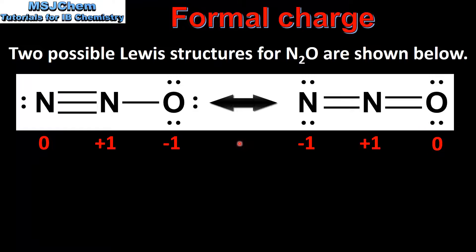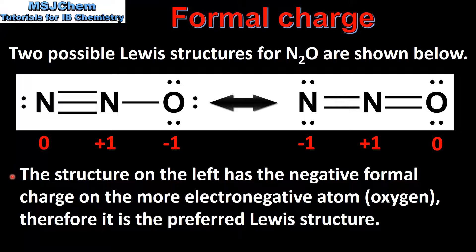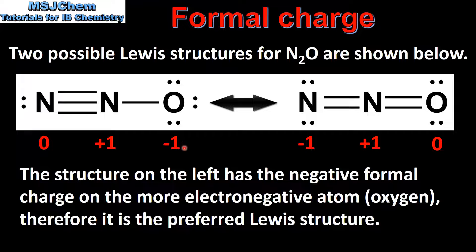So which Lewis structure is the preferred one? In the Lewis structure on the left the negative formal charge is on the oxygen atom. In the Lewis structure on the right the negative formal charge is on the nitrogen atom. The structure on the left has the negative formal charge on the more electronegative atom, which is oxygen, therefore it is the preferred Lewis structure. When you have two Lewis structures like this, the preferred one has the negative charge on the more electronegative atom, which in this case is oxygen.